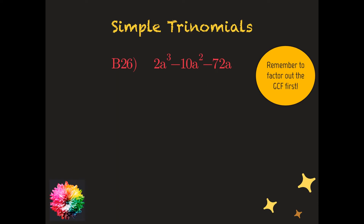Here's an example from Part B, question 26. I can see we have a trinomial, and the very first thing we do is factor out the greatest common factor — I'll repeat that until you always remember to do it. I can see coefficients 2, 10, and 72, so the greatest common coefficient is 2. I also have a³, a², and a, so the smallest shared variable is a. Factoring out 2a leaves us with a² − 5a − 36 inside the bracket.